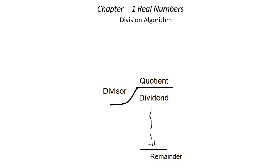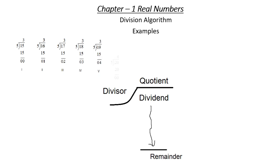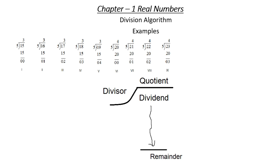Starting with some examples of divisions. In all these divisions on the screen, you will notice that the divisor is 5 but the remainder is ranging from 0 to 4. There is a concept behind this: whenever a number is divided by any number, the remainder will be less than the divisor. The remainder can be 0 but it cannot exceed the divisor. You will notice the remainders cycle from 0 to 4.